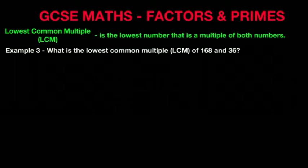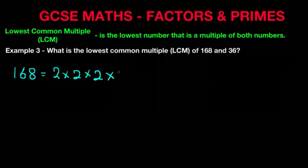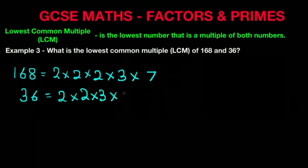Now let's have a look at our example: What is the lowest common multiple of 168 and 36? Again, we're going to show our workings out, and we're going to use the workings out from the previous example. So we had 168 equals 2 times 2 times 2 times 3 times 7, and 36 equals 2 times 2 times 3 times 3.